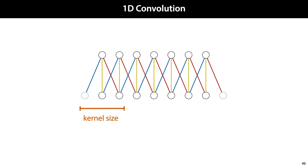All we need to do to fit this to our definition of a sequence layer is to add a little extra padding so that the input and the output have the same length. Note that even though we are now allowing information to propagate from one position in the input to another position in the output, we're only allowing this over a finite distance.